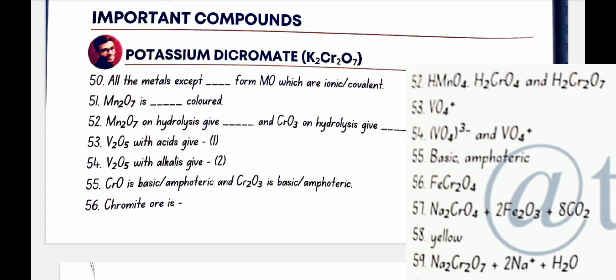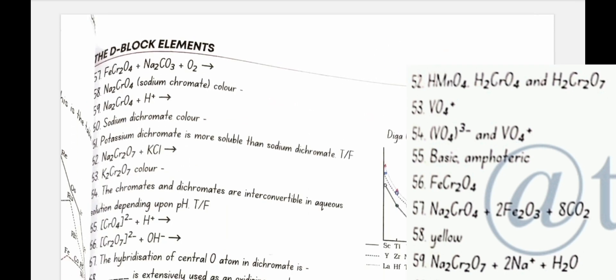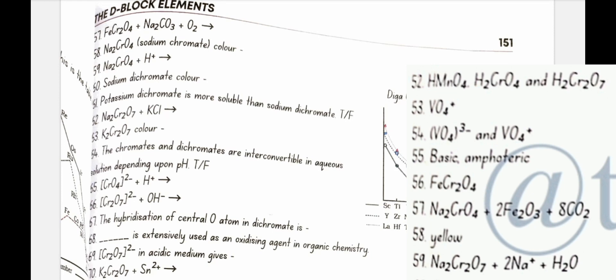Chromite ore is FeCr2O4. FeCr2O4 plus Na2CO3 plus O2 gives Na2CrO4 plus Fe2O3 plus CO2.